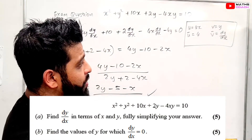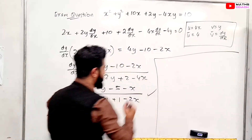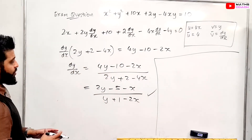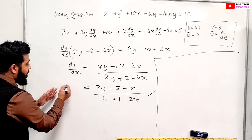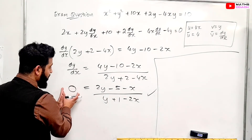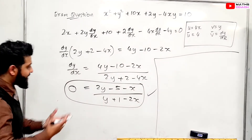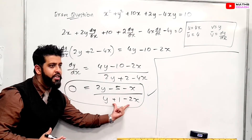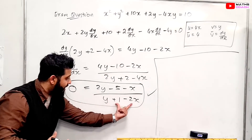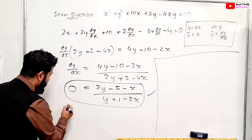The next part says find the values of y for which dy/dx equals 0. We set dy/dx equal to 0. To solve this, step one is to get rid of the denominator by multiplying both sides by it. When I multiply the denominator across to the side with 0, I end up with 0.